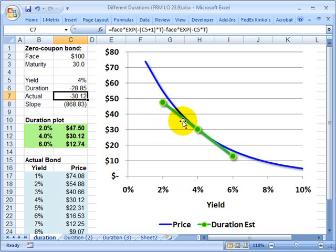Now, my actual change in this case is $30.12. And so you can see that is reflected in the graph. The duration tells us if we move up the line or down the line, we'll get to some point.